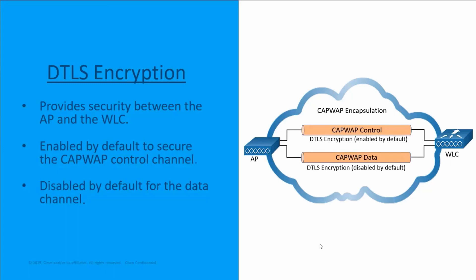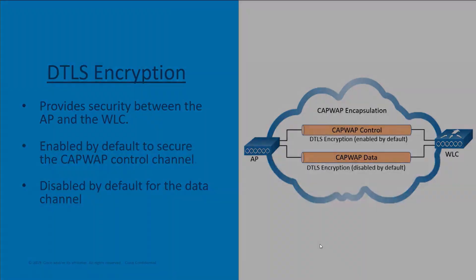CAPWAP data encryption is optional and would be enabled per access point. It requires a DTLS license to be installed on the wireless LAN controller prior to being enabled on an access point.